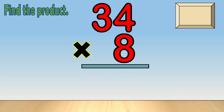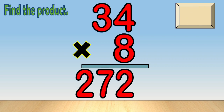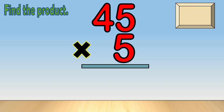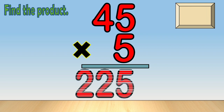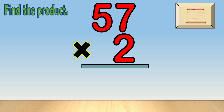Thirty-four times eight — the answer is 272. Forty-five times five — times up, the answer is 225. Fifty-seven times two — times up, the answer is 114.